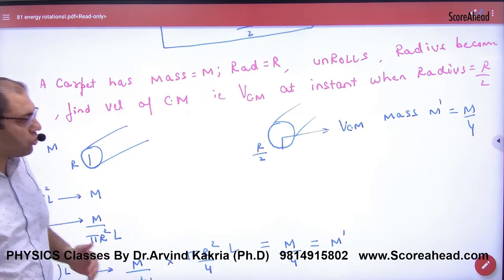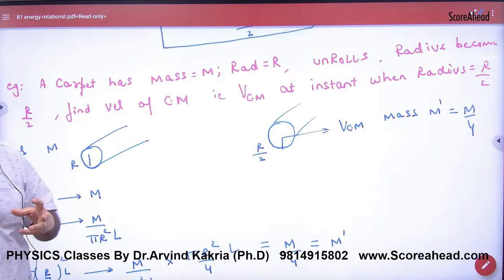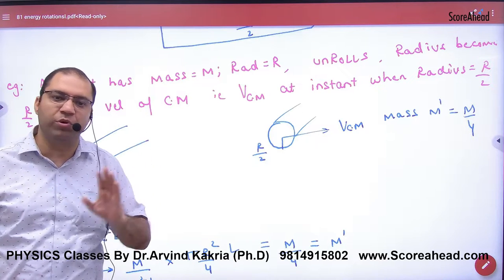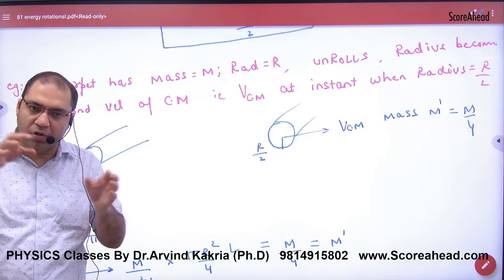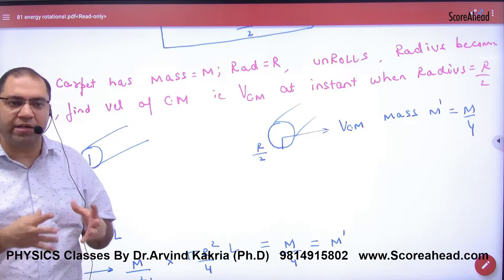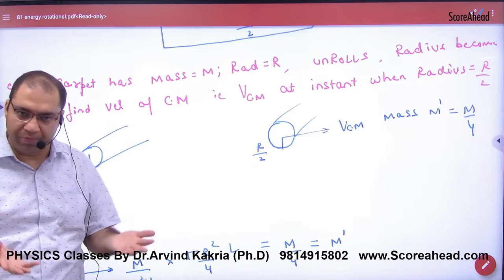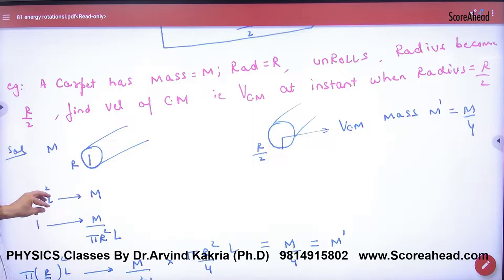Inside this question, the first thing is if its mass is M, then the cylinder length is L. No change in L length. The carpet is small, the radius is small, but the length will remain same. So the mass in the carpet, which is a solid cylinder, is distributed over the volume. So if the volume of the carpet was π R² L, then the mass is M.